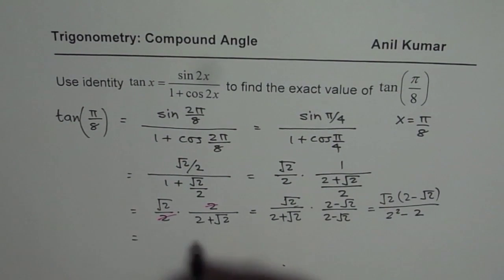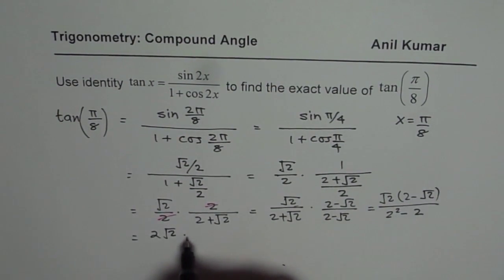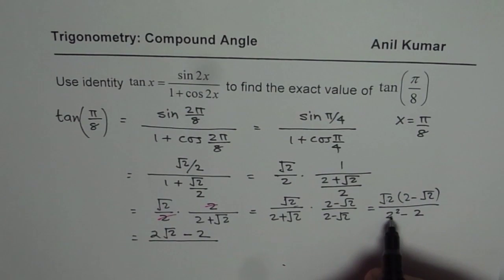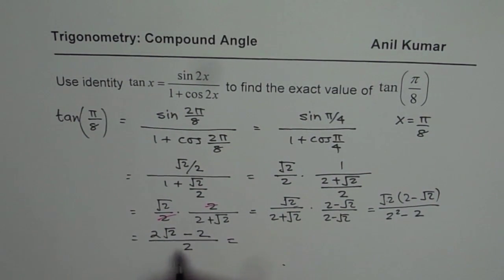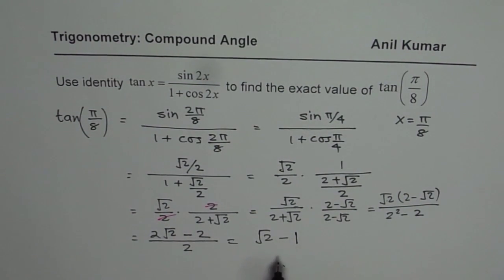What we get here is square root 2 times 2 minus square root 2 times square root 2 is 2 divided by 2 square is 4. 4 minus 2 is 2. Now, you can divide both by 2. You get square root 2 minus 1. So indeed, tan pi by 8 is square root 2 minus 1.